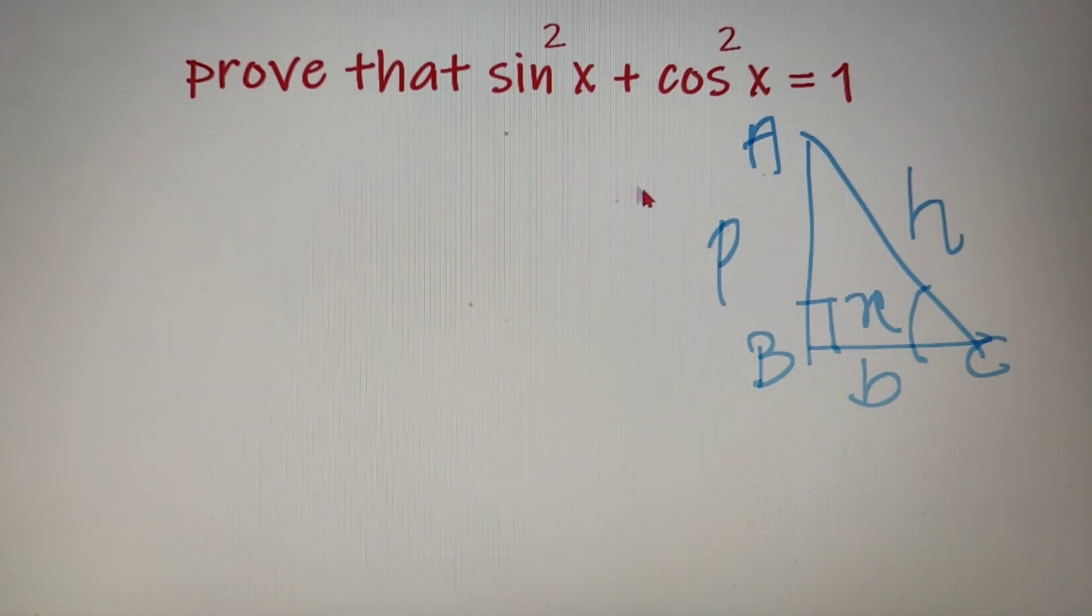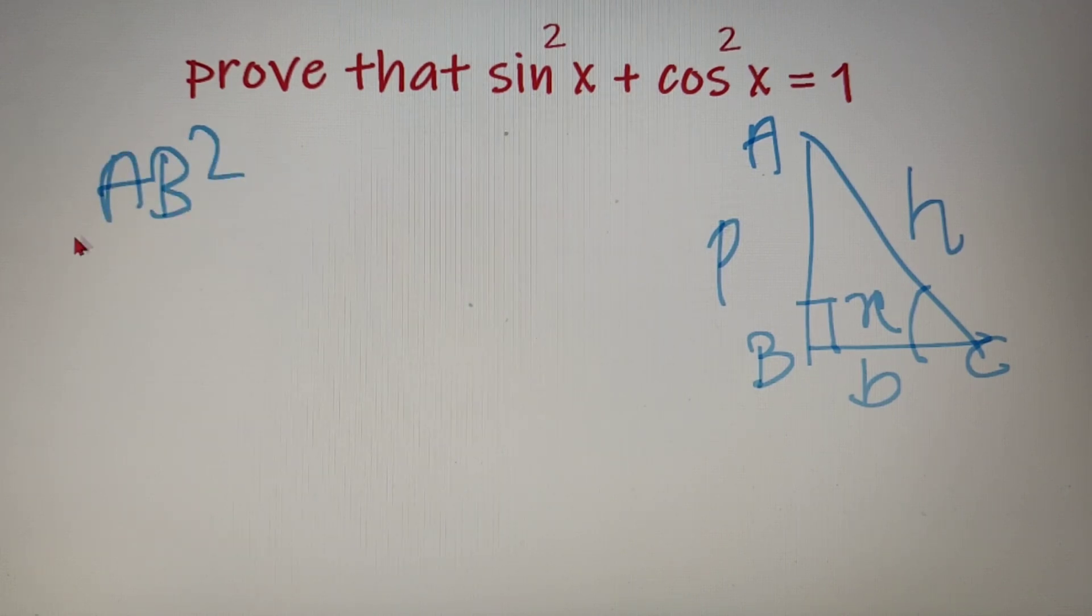Now I know that sine x is equal to perpendicular by hypotenuse, so instead of sine square x I can write it down as AB square by AC square.